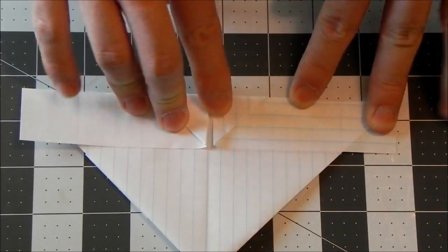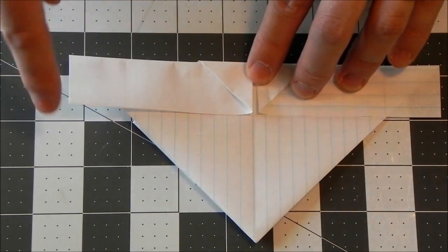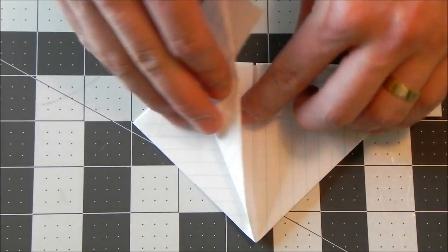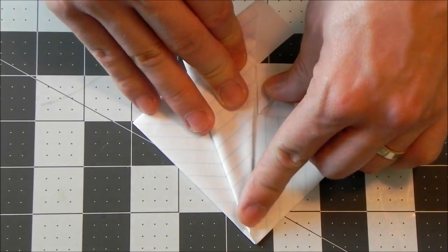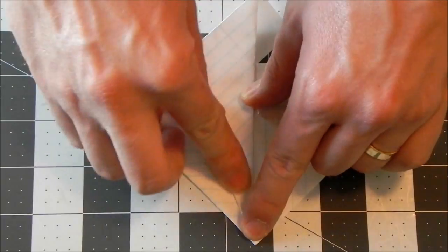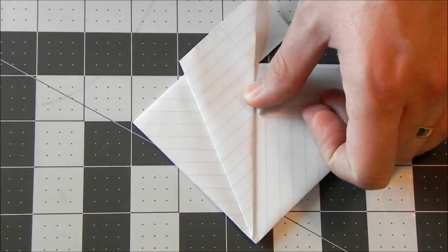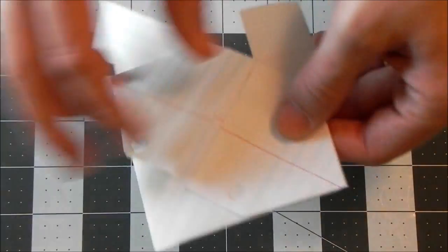We're starting to form the ears with this movement. So now we're going to take this diagonal edge and fold it to the center line. And what we're going to do now is turn it over.